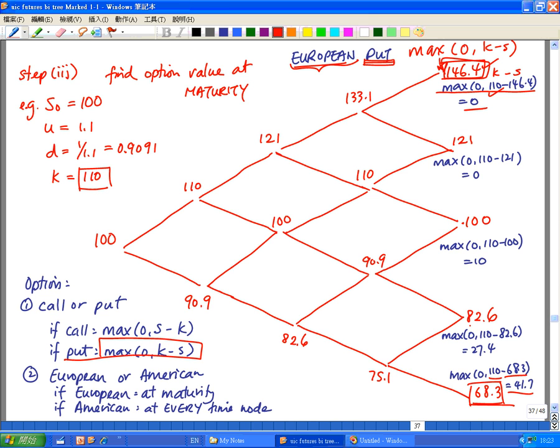I would sell using the option and my profit is 41.7. Similarly, I apply to this node, 82.6 is the market price. My profit is 27.40 and this node, my profit is 10. So I apply the same concepts as in the European call, but I get different values if it's a European put.